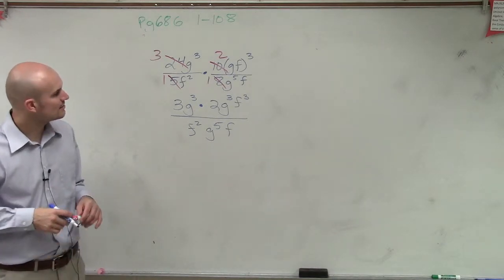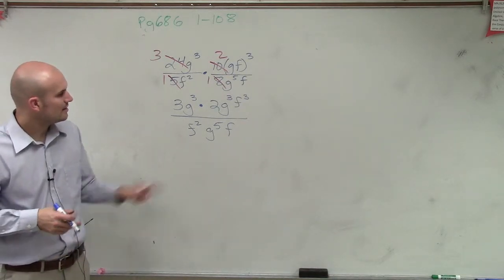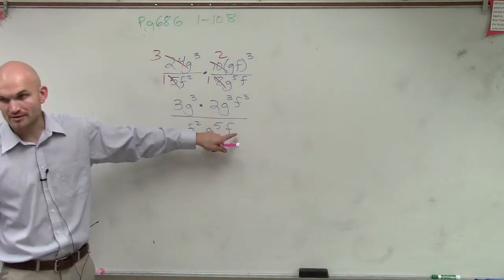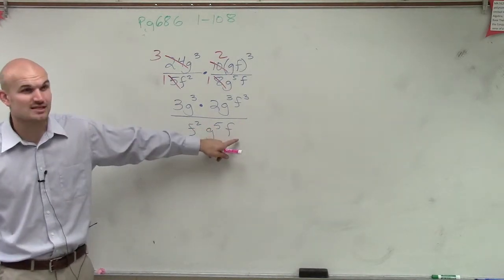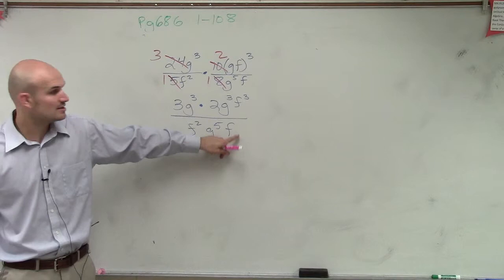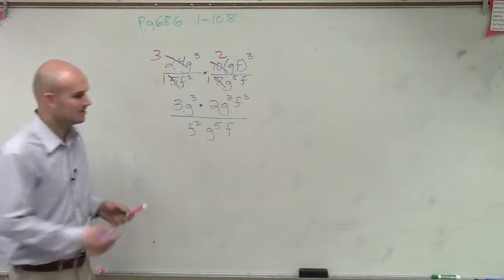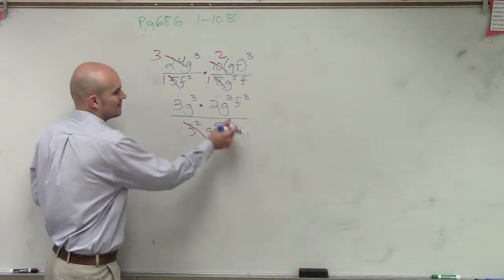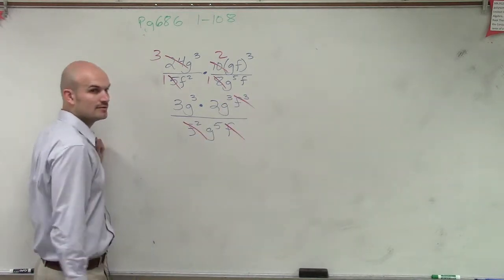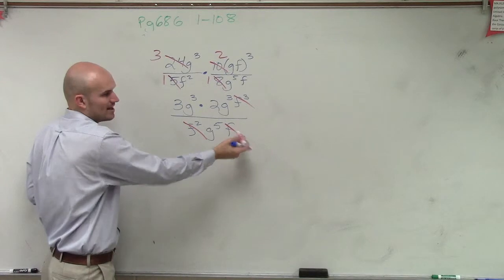So now we can start canceling, we can start eliminating some again. Here we go. This is f cubed, right? f squared times f, that's going to be f to the third power. Well, divided by f to the third power, what do you do? You subtract them, right? So these all divide into 1, because this is f cubed on the bottom when I multiply that.